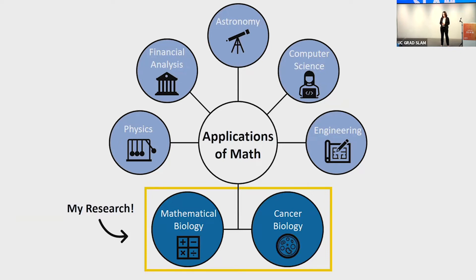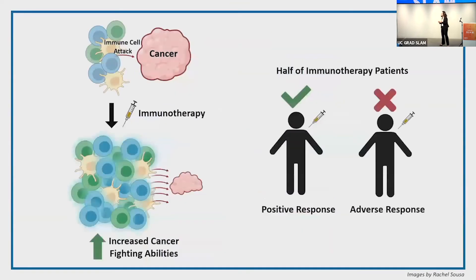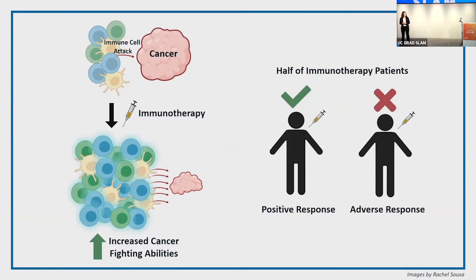I specifically focus on cancer biology, as cancer is one of the leading causes of death worldwide. One promising cancer treatment has been to stimulate a patient's own immune system to better fight their cancer. This is done with drugs called immunotherapies. There are many immunotherapies available, and new ones are constantly being developed. However, certain immunotherapies only work in half of patients, and some patients have bad reactions to immunotherapies. We don't know exactly why this occurs.